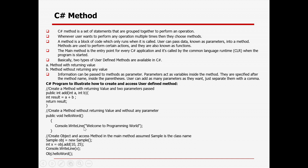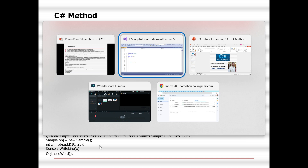To access a non-static method, you need to create an object or instance of the class first, then call the method. For a method with returning value you can print it out, and for one not returning a value you can directly call the method. You can also define the method as static — in that case you don't need to create any object or instance; you can directly access the method in the main method.